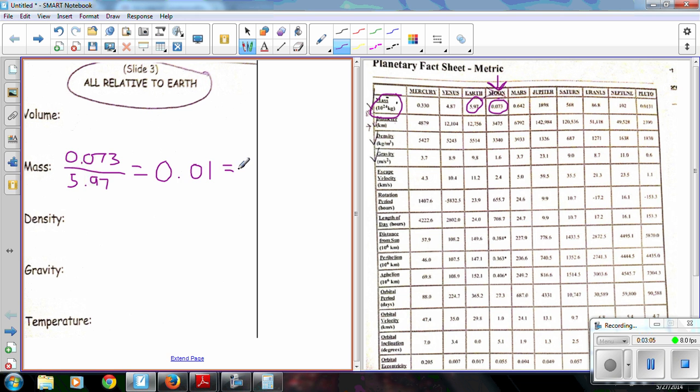And that means that the moon is 0.01 times as much as the Earth. Or if I want to change this to a percentage, move the decimal two places, the size or the mass of the moon is 1% of the Earth.